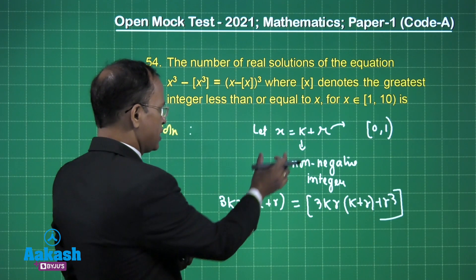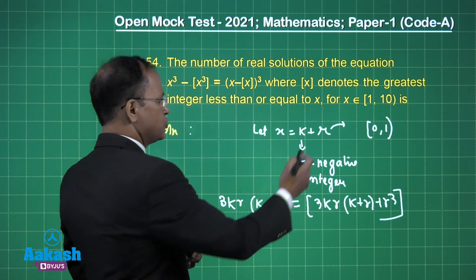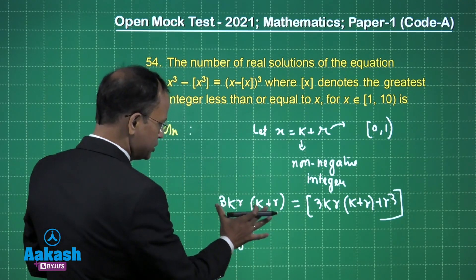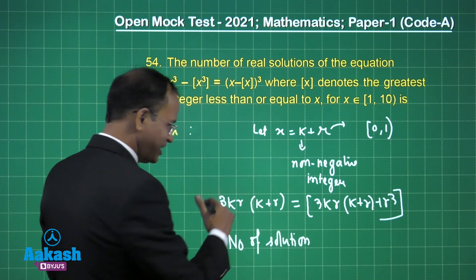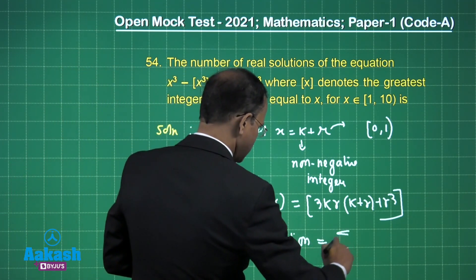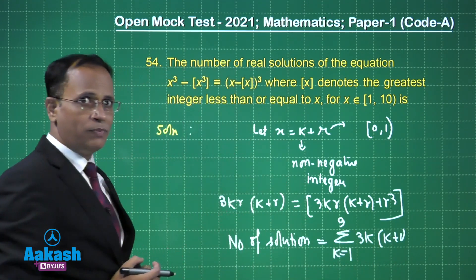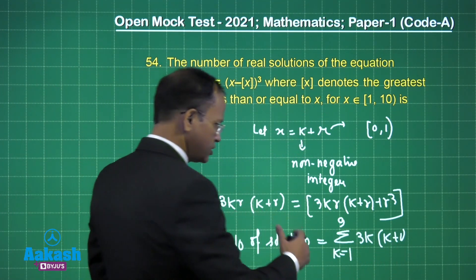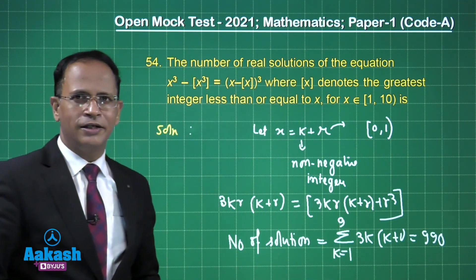Since r ∈ [0,1) and x ∈ [1,10), k ranges from 1 to 9. The entire expression must be an integer. The number of solutions equals Σ (k=1 to 9) of 3k(k+1), which expands to 3k² + 3k. Using the formulas for sum of squares and sum of first n natural numbers, the total comes out to 990. So the answer is 990.